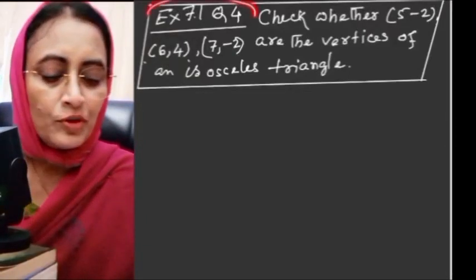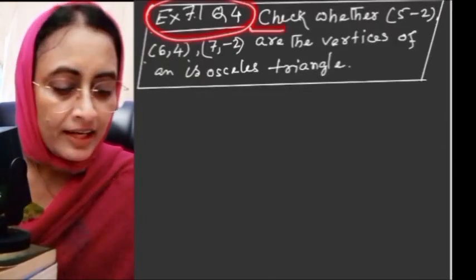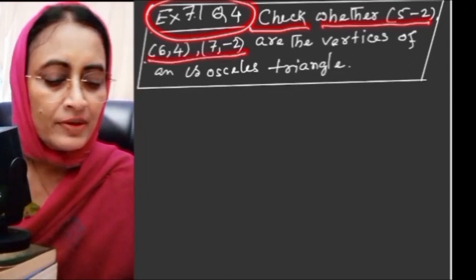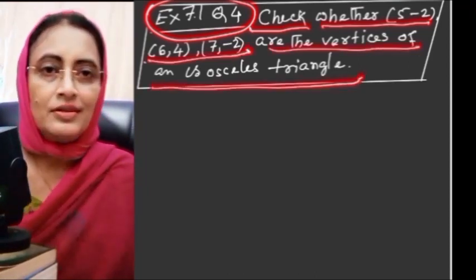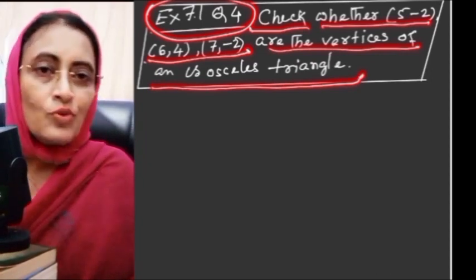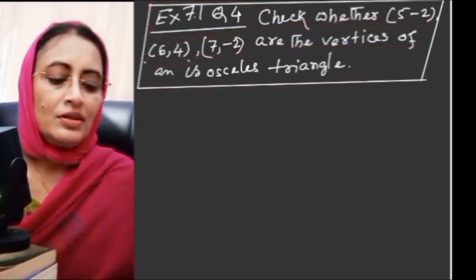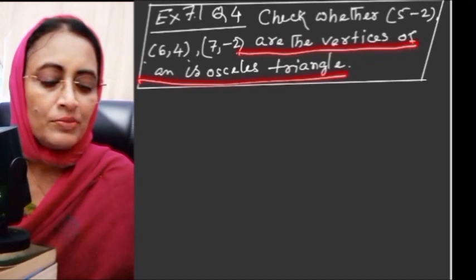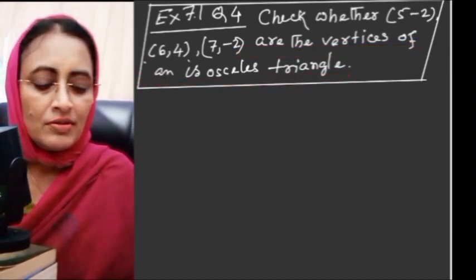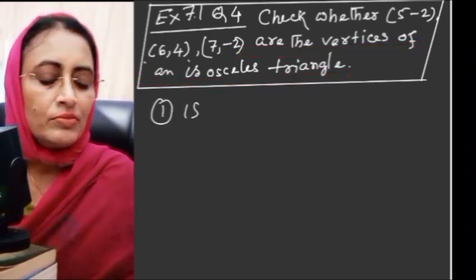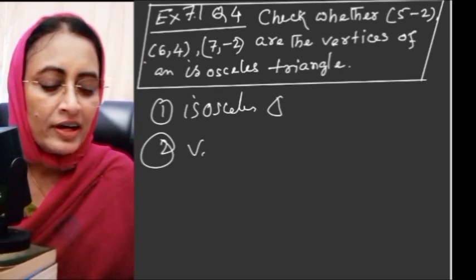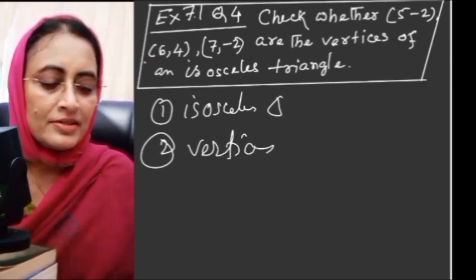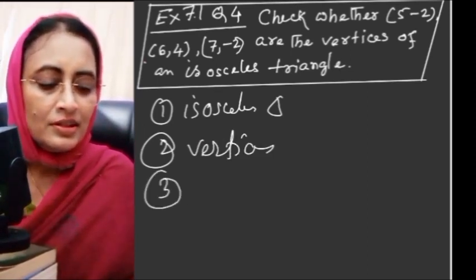This is Exercise 7.1, question number 4: check whether the points (5,-2), (6,4), (7,-2) are the vertices of an isosceles triangle. To solve this, we need to know: number one, what is an isosceles triangle? Number two, what are vertices? And number three, these are the given points.